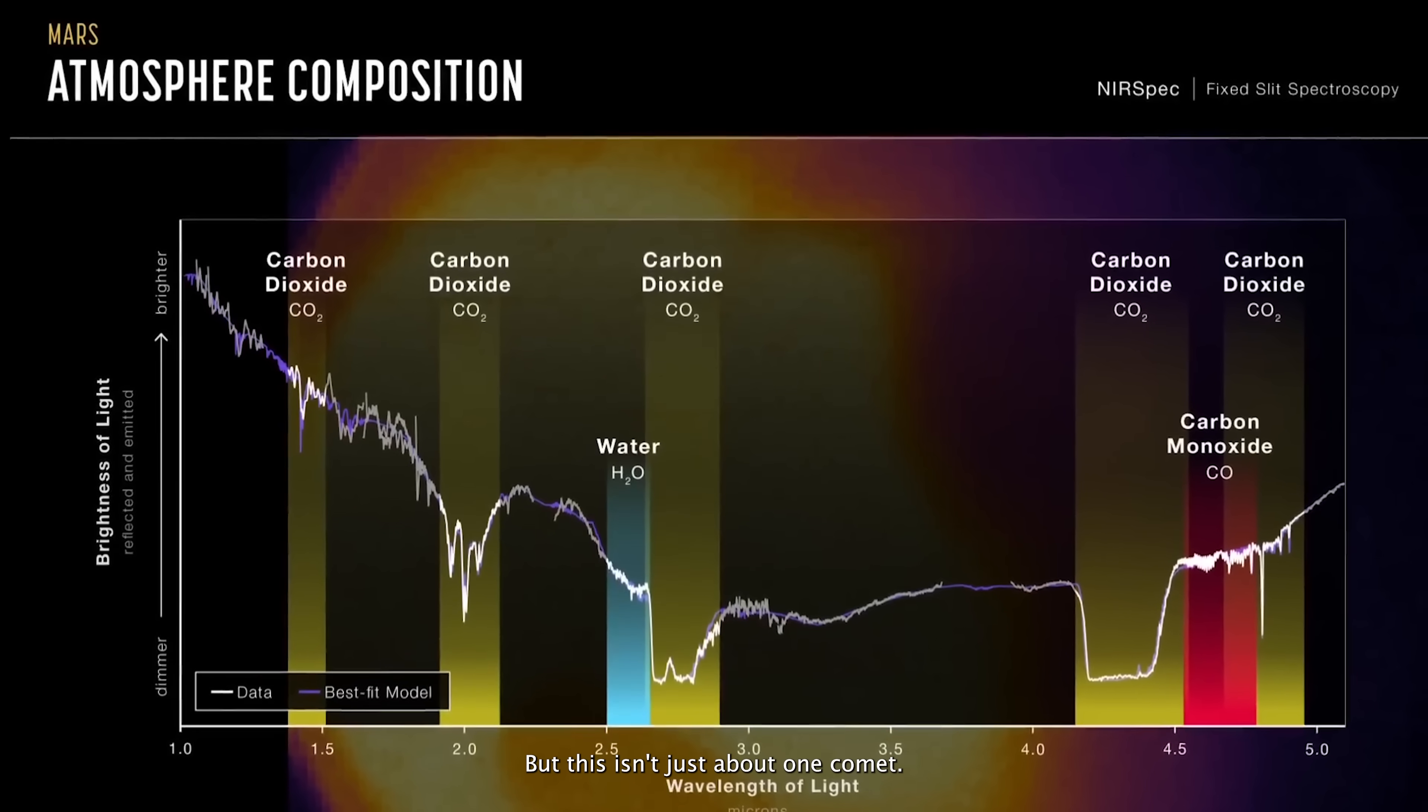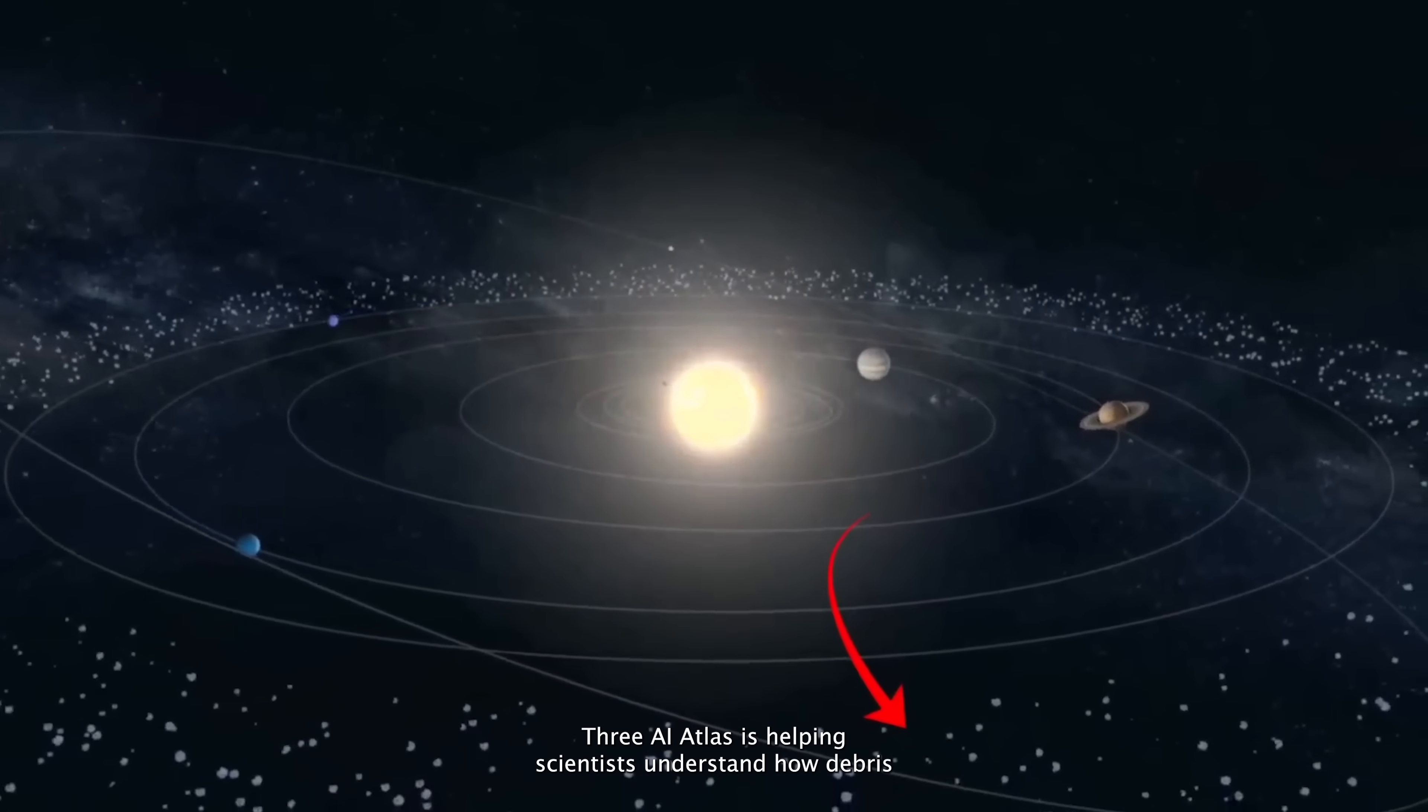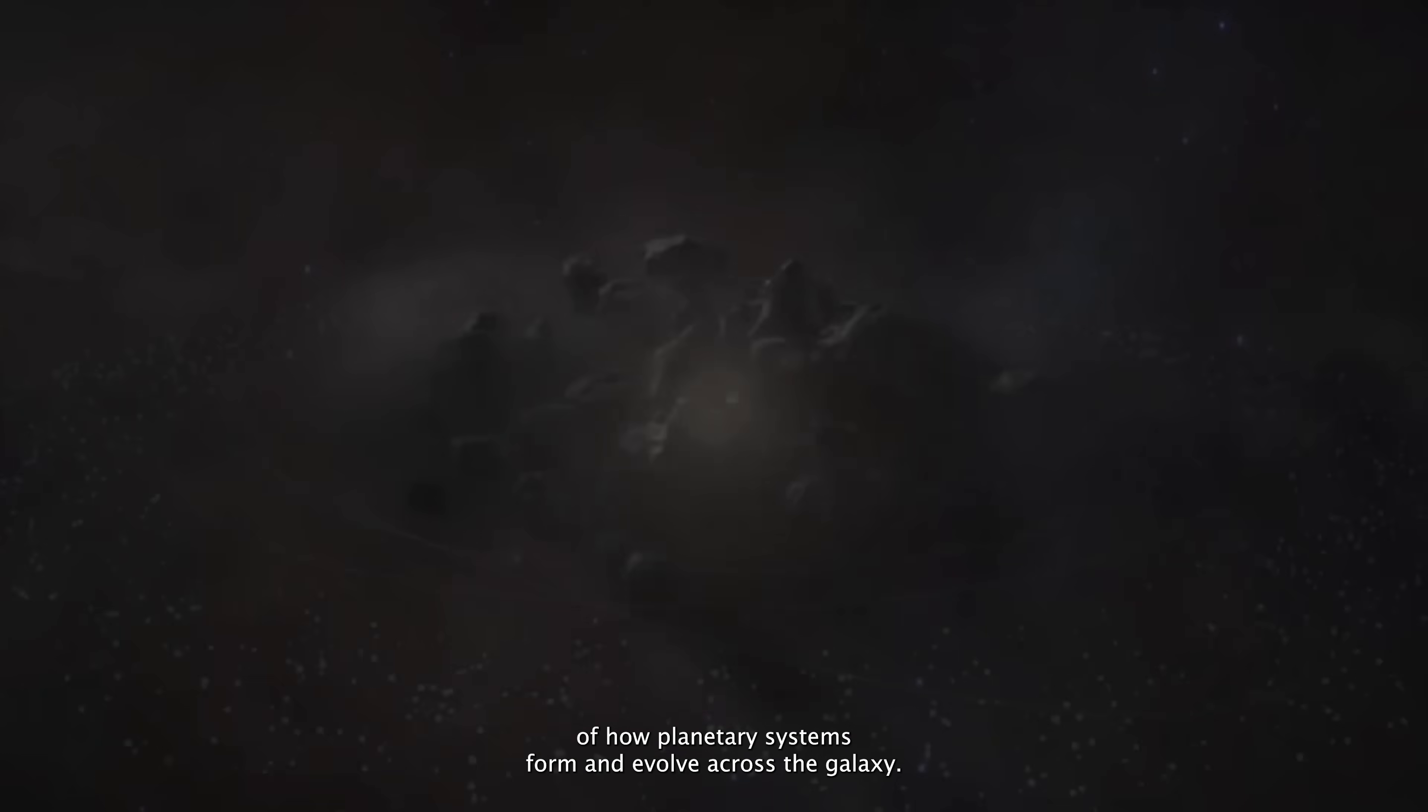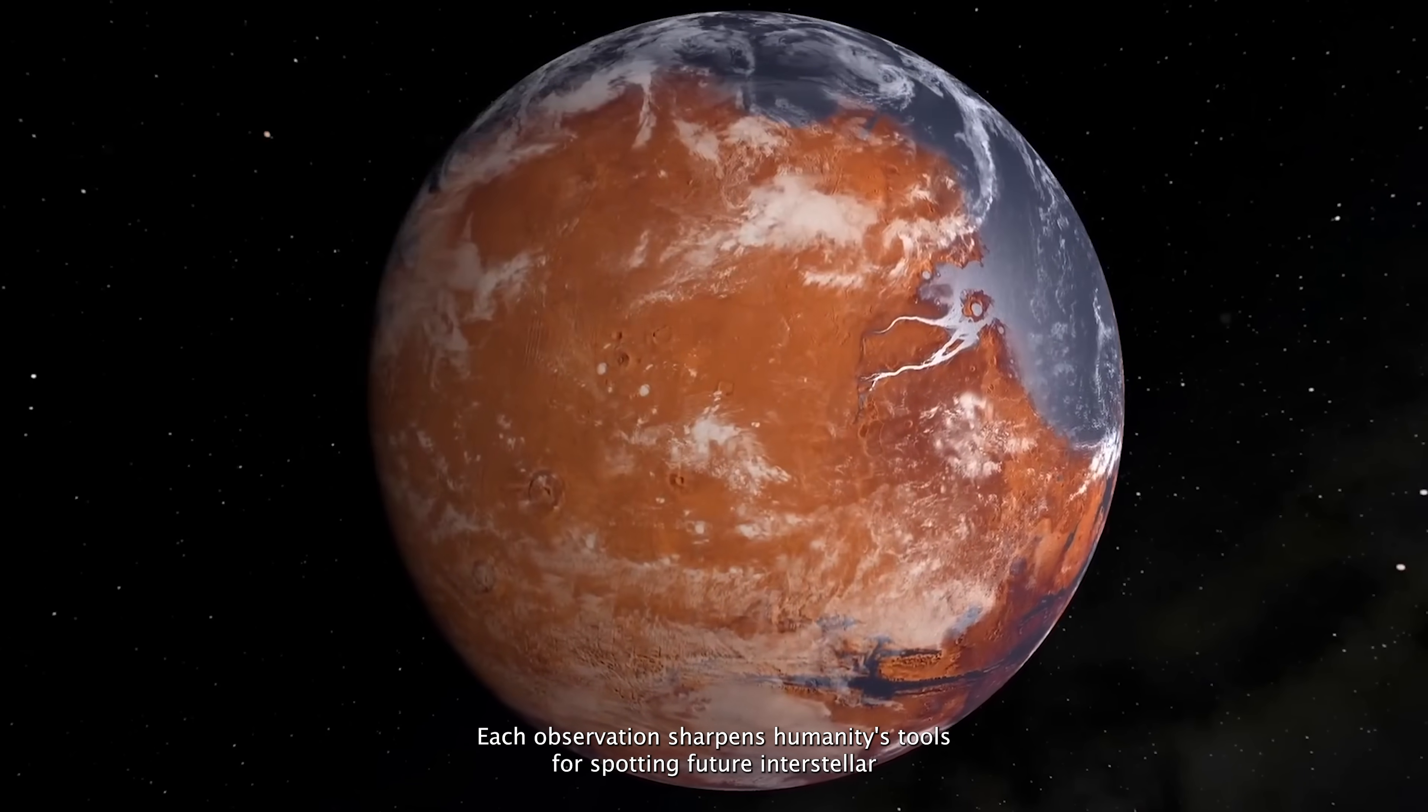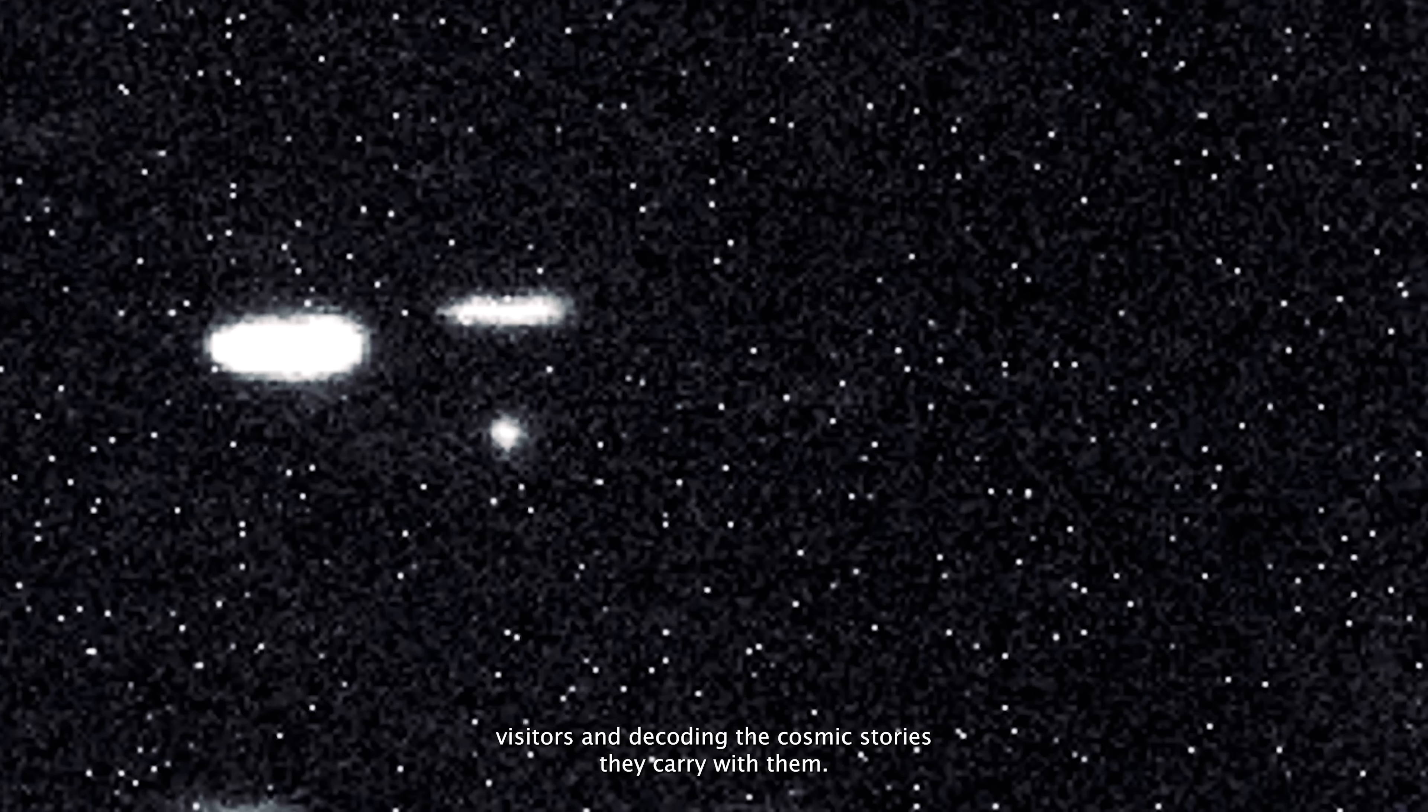But this isn't just about one comet. 3i Atlas is helping scientists understand how debris from distant star systems drifts into ours, reshaping theories of how planetary systems form and evolve across the galaxy. Each observation sharpens humanity's tools for spotting future interstellar visitors and decoding the cosmic stories they carry with them.